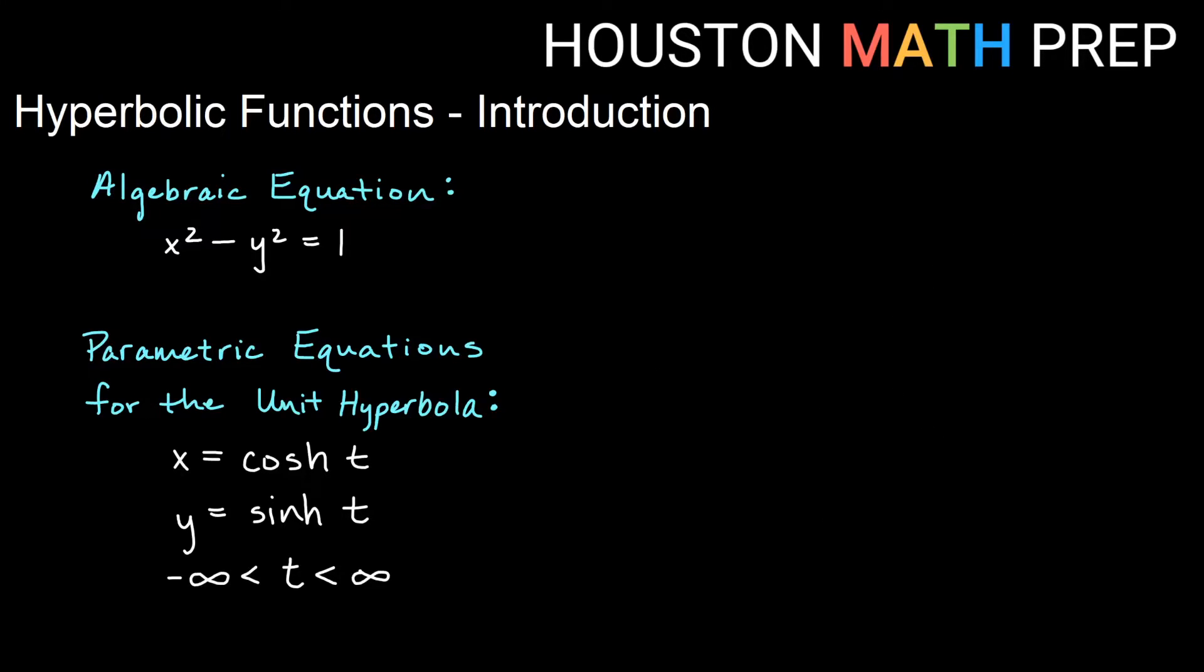If we define parametric equations this way, then the path that we trace out will be all of the x and y values for these functions, hyperbolic cosine and hyperbolic sine. So here we are traveling this path, this trajectory that's our parametric equations of the hyperbolic cosine being the x value and the hyperbolic sine being the y value.